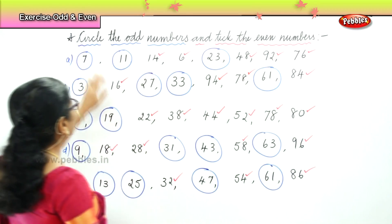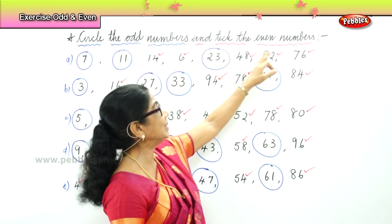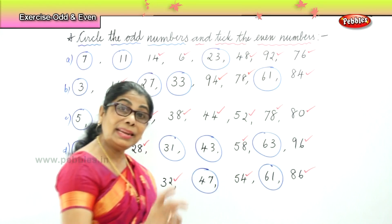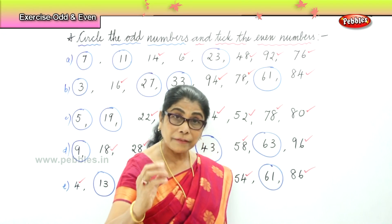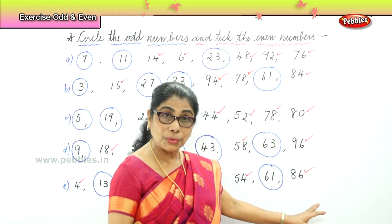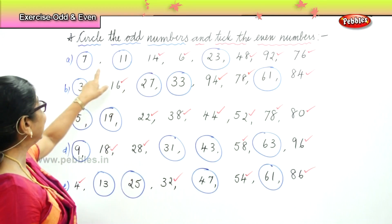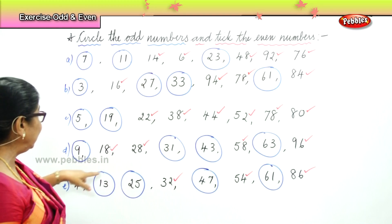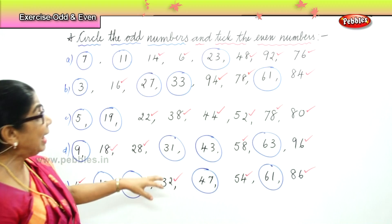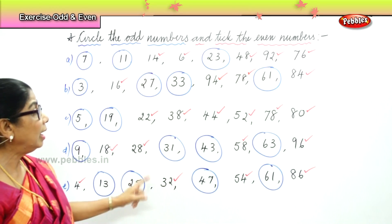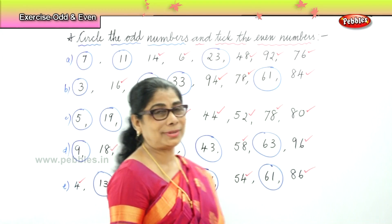Now what have we done here? We circled all the odd numbers in blue and ticked the even numbers in red. For any number given, all you need to do is look at the last digit. If it ends in two, four, six, eight, or zero — they are all even numbers. If the number ends in one, three, five, seven, or nine — then they are all odd numbers, because there is always one left out.